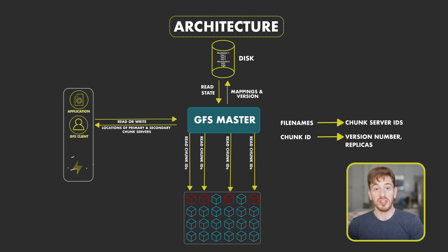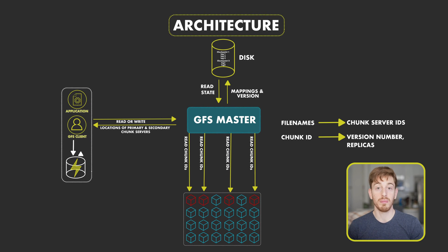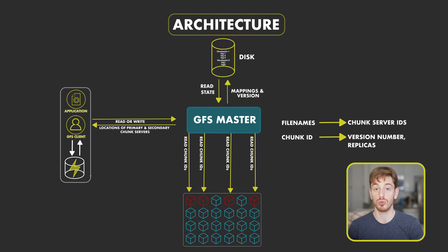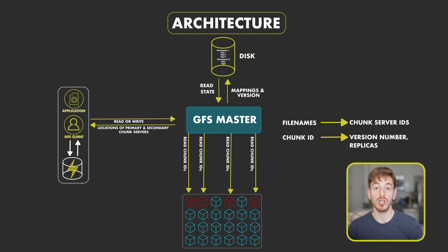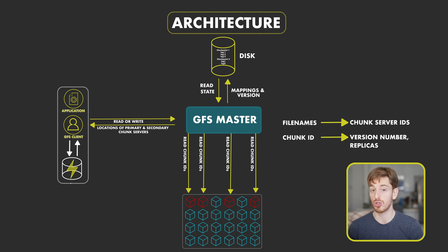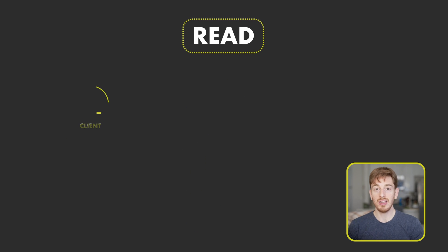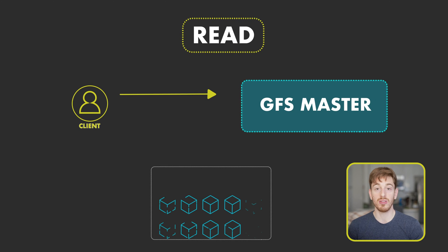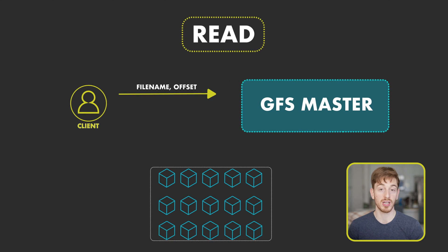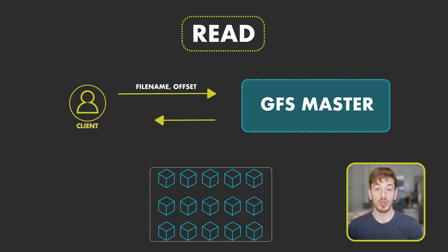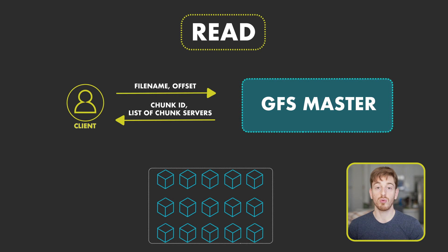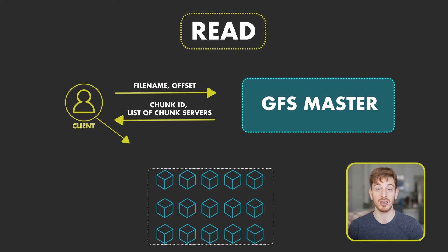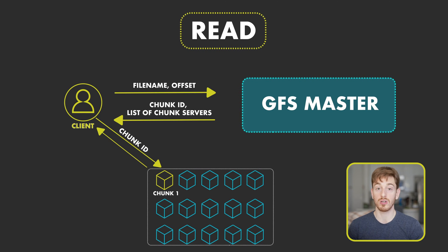After the client receives primary replica information from the master, the GFS client caches it so subsequent reads or writes on those chunks won't require another master request. On a read, the client tells the master the file name and the offset of the portion it wants to read. The master returns the chunk ID and the list of servers containing it, and the client requests that chunk directly from the chunk server, which returns the data.